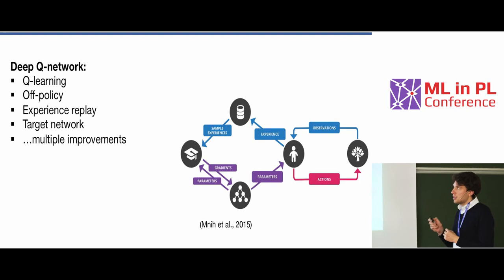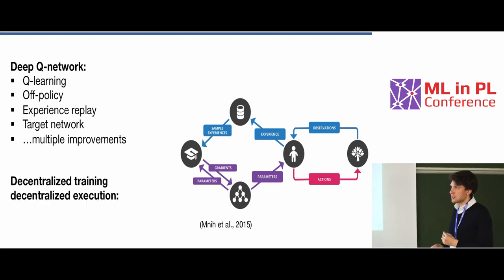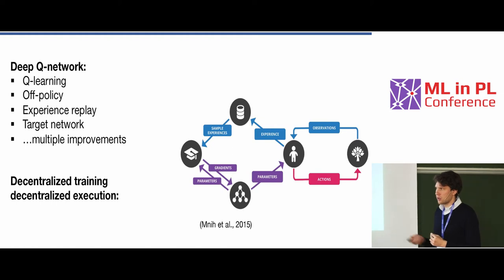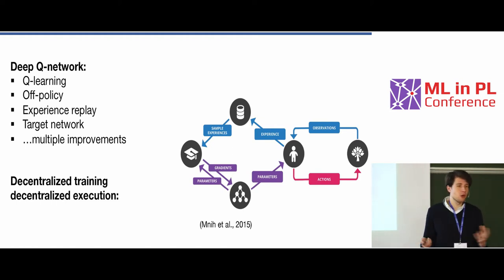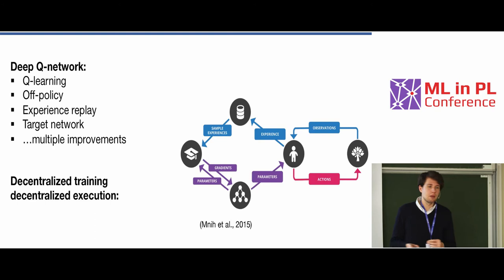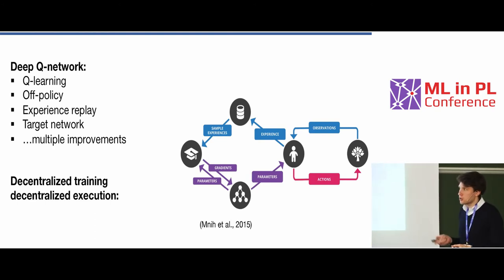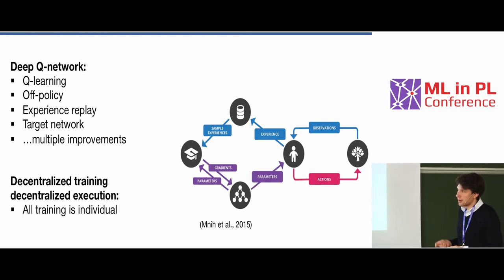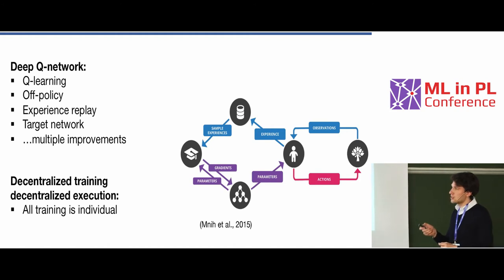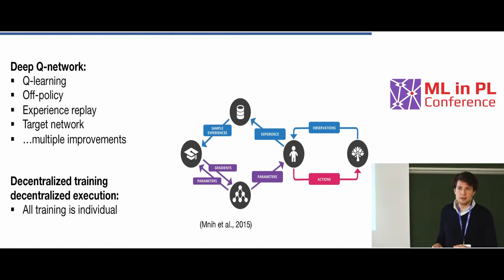But DQN also has many limitations. One is actually the fact that it's a decentralized training, decentralized execution algorithm — meaning all the training is local, all the execution at test time is also local, and the training is individual. And importantly, this is a significant limitation.